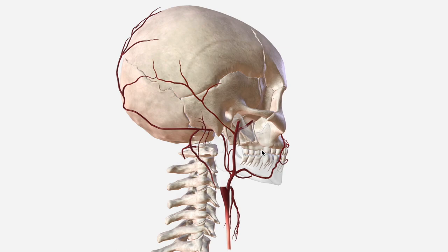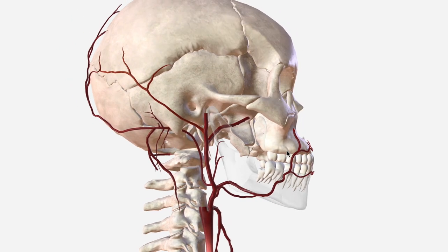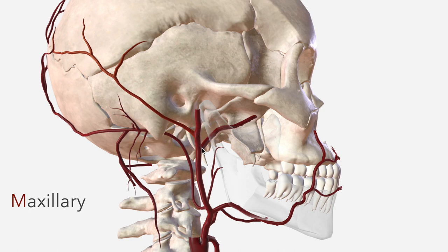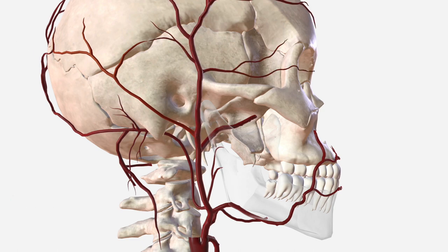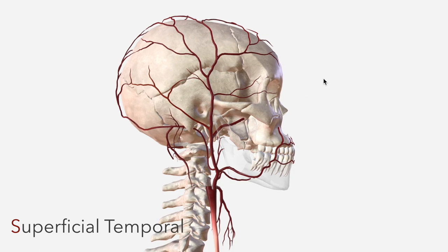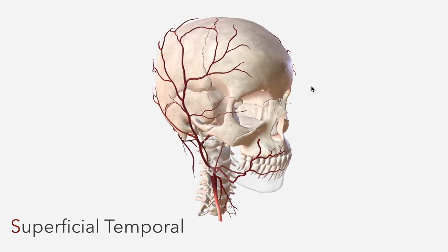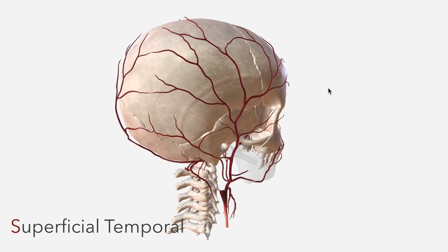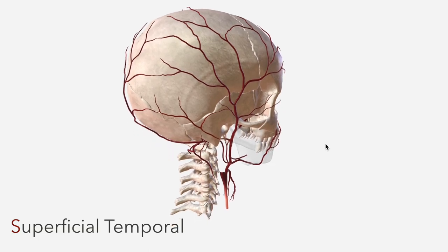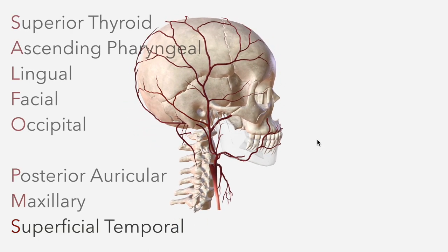If we make our mandible transparent now, we'll get a nice view of the maxillary artery, which is the next branch, heading towards the pterygopalatine fossa here and supplying much of the deep structures of the face. This is one of the terminal branches of the external carotid artery. The other terminal branch is the superficial temporal, which has this beautiful branching pattern over the scalp, anteriorly across the parietal region, all the way back to the border of the occipital. So that's it for the branches of the external carotid, which follow the mnemonic SELFO-PMS.